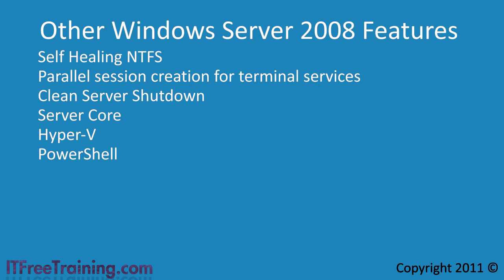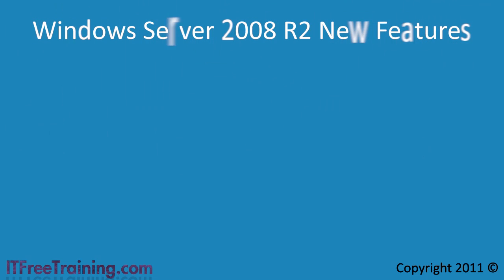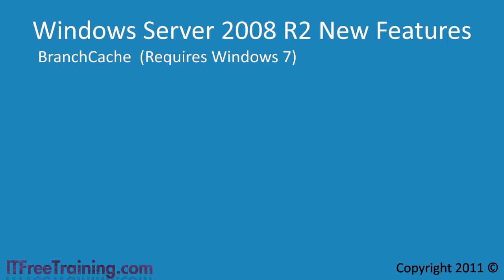The next features I want to look at are the new features in Windows Server 2008 R2. The first feature is Branch Cache. Branch Cache allows files to be cached on a local network rather than copying them over the wide area network again. Branch Cache only works with Windows 7 clients. The next feature is Direct Access. Direct Access also only works when combined with Windows 7 clients. Direct Access allows users to connect to the corporate network without having to create a VPN connection — a Direct Access connection back to the office will be made automatically when the computer is connected to an internet connection.